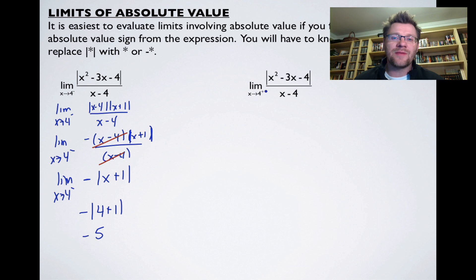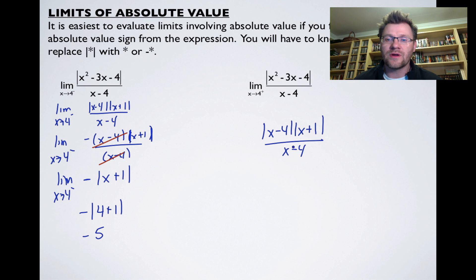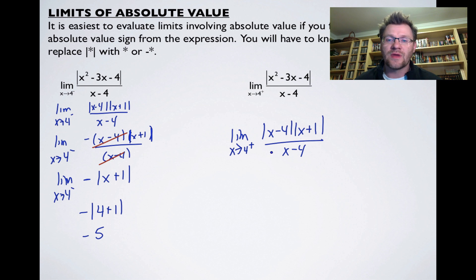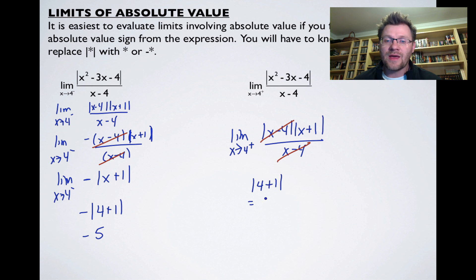Looking at the same limit but as x approaches 4 from the positive side, we reach the same factored form: absolute value of (x minus 4) times (x plus 1), all over (x minus 4). Now we replace the absolute value of (x minus 4) with the positive version, since we're coming from the right. After cancelling, we substitute 4 to get the absolute value of (4 plus 1), which is positive 5.